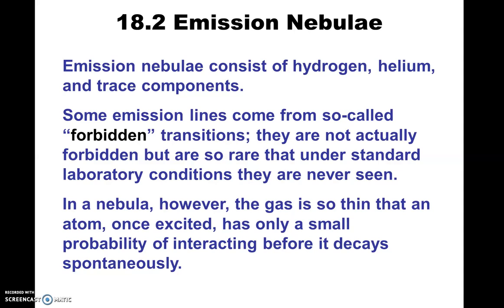Helium got its name because the spectrum was found in the sun. These forbidden transitions — when people first started looking at them, they said there must be some other form of matter there. Just like helium, I think it was called nebulum, but it turned out it wasn't some exotic element or molecule that had never been observed. It was just a transition that is very unlikely to occur in the limited number of atoms that we were looking at. Nowadays we can force oxygen to undergo those transitions, so it's not that unusual — but back then it was. That's what they're called: the forbidden transitions.